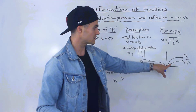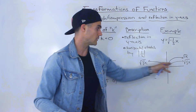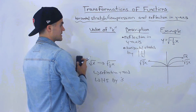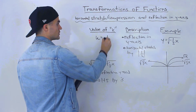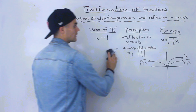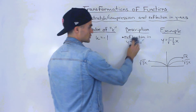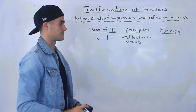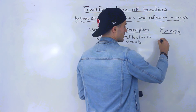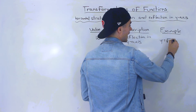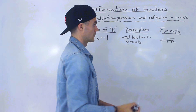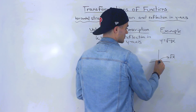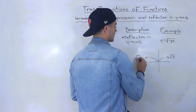The next case is if k is equal to negative 1. If k equals −1 there is no horizontal stretch or compression — just a reflection in the y-axis. An example is y equals the square root of negative x: it's like a negative 1 inside, so there's no horizontal stretch or compression, and the square root of negative x is simply the square root of x reflected in the y-axis.